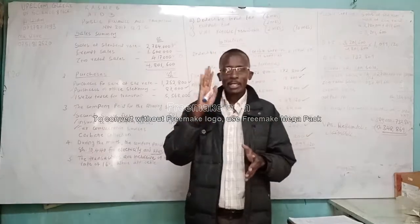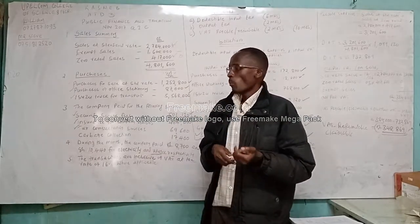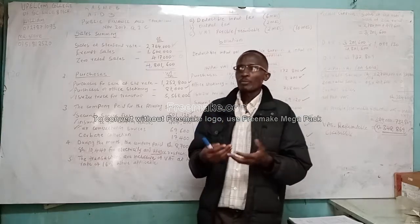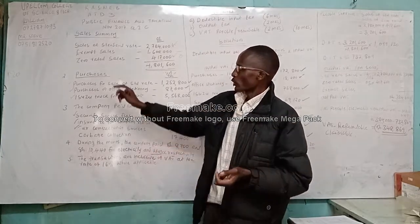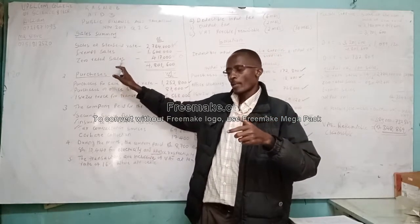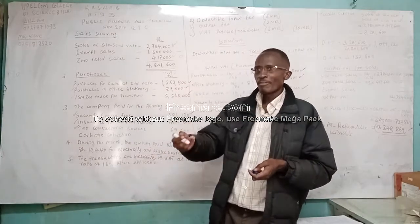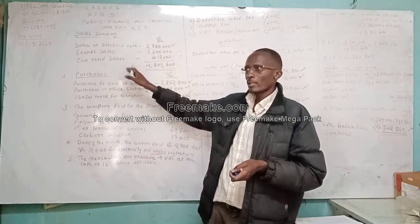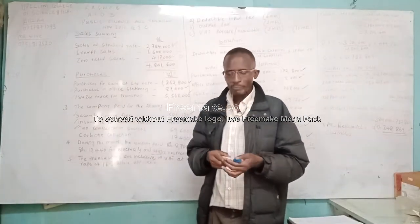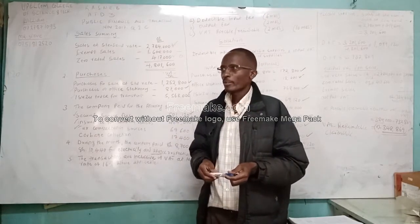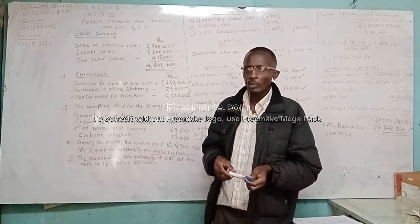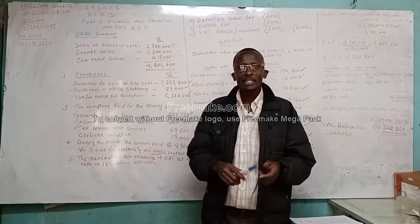As far as VAT is concerned, there are four things the student must know. Number one, where transactions are inclusive of VAT, use the formula 16 over 116 times the gross amount. If transactions are exclusive, the formula is 16 over 100 times the gross amount. Input VAT is for purchases and expenses, and output VAT is for the sales. That is the end of the lesson. My name is Mr. William. My contact is 0727871093. We meet again.